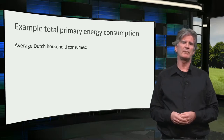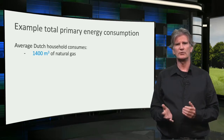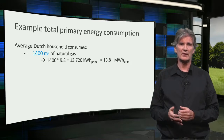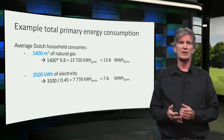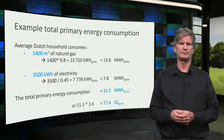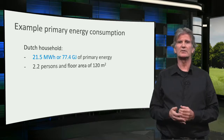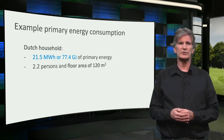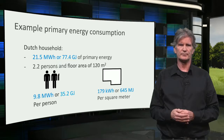Here is an example to calculate the total primary energy consumption per year, again using the average Dutch household. It consumes 1400 cubic meters of natural gas, which equals 13.2 megawatt hours of primary energy, and 3500 kWh of electricity, which equals 7.8 megawatt hours of primary energy. This converts to a total of 21.5 megawatt hours or 77.4 gigajoules of primary energy. The next step is to calculate the primary energy used per person and per square meter of floor area. Based on an average of 2.2 persons per household and a floor area of 120 square meters, the average energy consumption is 9.8 megawatt hours or 35 gigajoules per person, and 179 kWh or 645 megajoules per square meter.